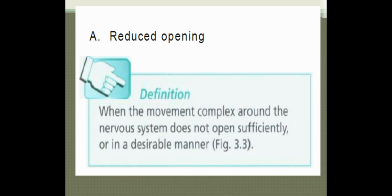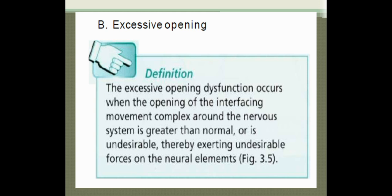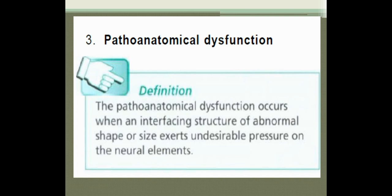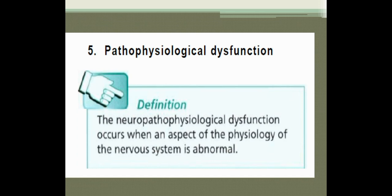Reduced opening occurs when the movement complex around the nervous system does not open sufficiently or in a desirable manner. Excessive opening dysfunction occurs when the opening of the interfacing movement complex around the nervous system is greater than normal or undesirable, thereby exerting undesirable forces on the neural element — for example, in case of hypermobility. Patho-anatomical dysfunction occurs when an interfacing structure of abnormal shape or size exerts undesirable pressure on the neural element.